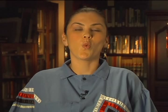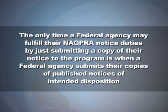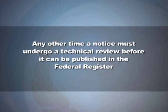Now that we know there are two different types of Federal Register notices, let's discuss the Federal Register notices process. Federal Register notices are published by the National NAGPRA program as part of their administrative duties. The only time a federal agency may fulfill their NAGPRA notice duties by just submitting a copy is when submitting copies of published notices of intended disposition. Any other time, a notice must undergo a technical review before it can be published in the Federal Register. Museums and federal agencies should expect to work closely with the National NAGPRA Program Notice Coordinator.